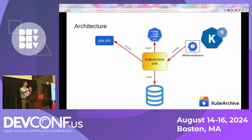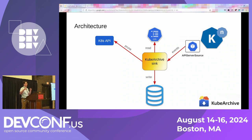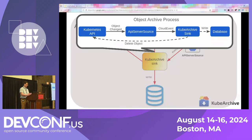If either of those expressions returns true, KubeArchive will write the object into the database. If delete when returns true and the object is successfully written to the database, it will then make a request to the Kubernetes API to delete your resource. If you change the filters provided to KubeArchive, the sync will react to the config map updating, recompile the CEL expressions, and start using the new ones. The Kubernetes API notifies the API server source, which sends a cloud event to the KubeArchive sync, which processes the object and either writes to the database or makes the deletion request.